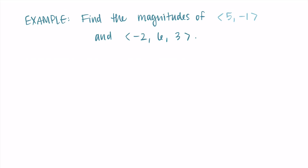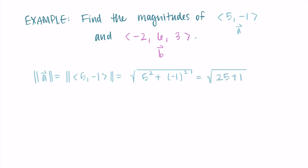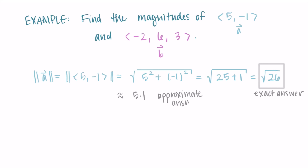For my first vector ⟨5, −1⟩, I'll call this vector a. The magnitude of vector a equals the square root of 5² + (−1)², so we take the x component squared plus the y component squared under the square root. That gives us the square root of 25 + 1, which is the square root of 26 — that's my exact answer. If we want an approximate answer, typing this into the calculator gives about 5.1.